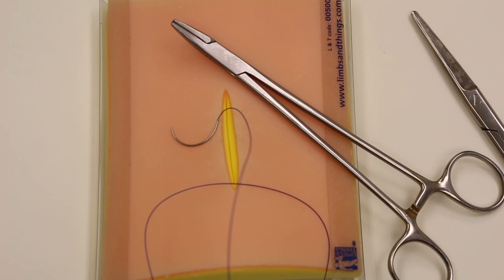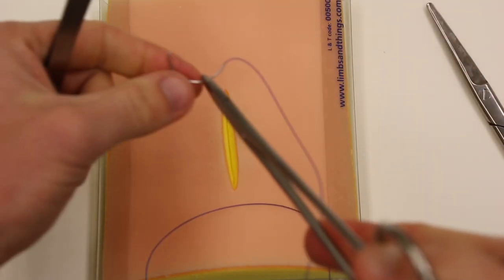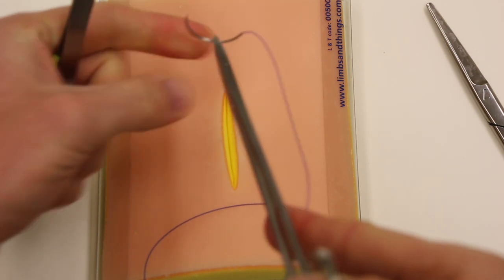The next technique we'll talk about here is the vertical and the horizontal mattress. These are both typically done with larger needles like a CT1 needle here and a heavy monofilament. This is oproline shown here.